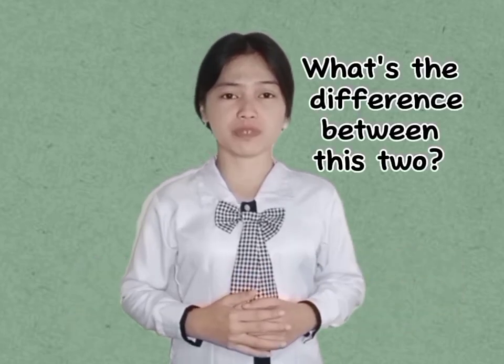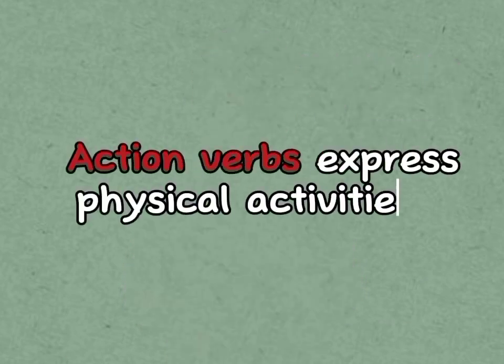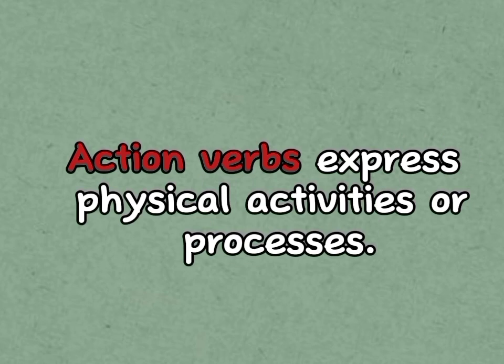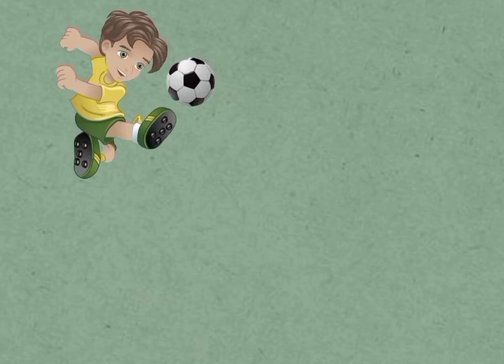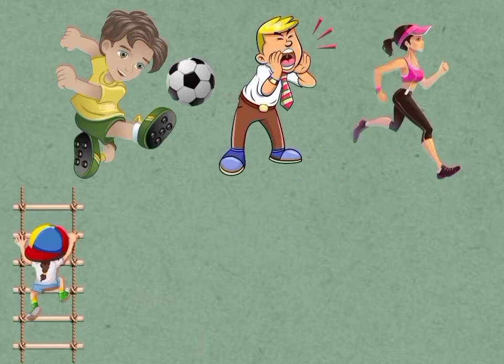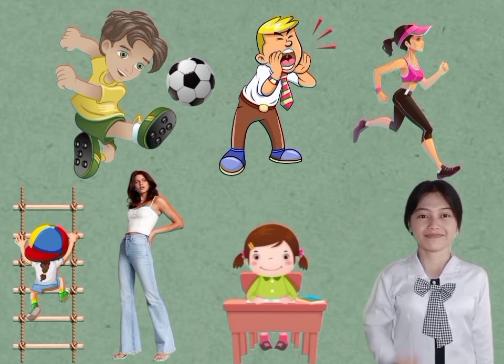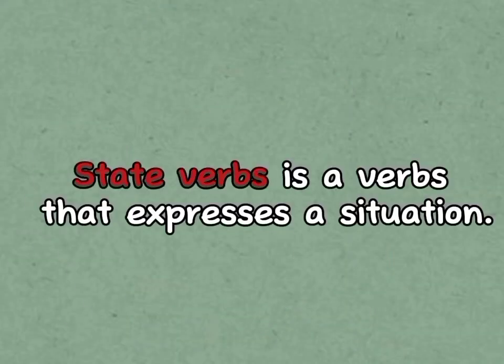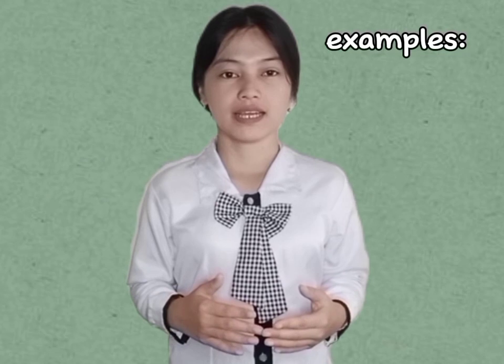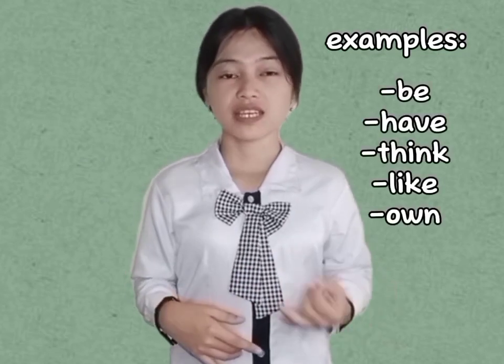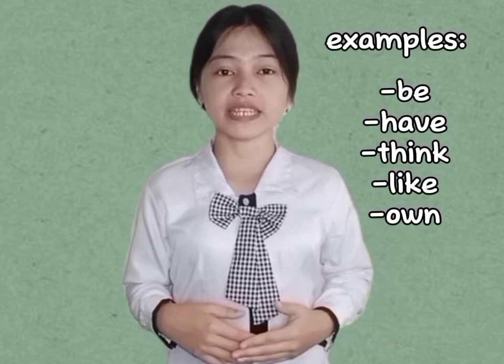What's the difference between these two? Action verbs express physical activities or processes. For example, verbs like kick, shout, run, climb, stand, sit, and grow. But a stative verb is a verb that expresses a situation. For example, verbs like be, have, think, like, and own.